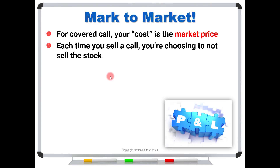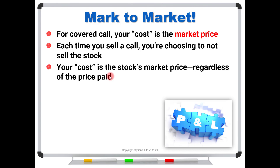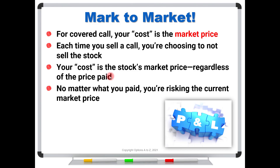Each time you sell a call, you are choosing not to sell the stock. Think about it — you might have spent a hundred dollars for the stock initially and written a bunch of calls, but what if it's now trading for three hundred or five hundred? Should you say you've got a negative cost basis? Not really, because if you had the opportunity to sell the shares right now for a much higher price but you're choosing not to — instead putting those shares at risk again for another month — you should really consider the current market price as the value of your shares. Your cost is the stock's market price, regardless of the accounting price you actually paid.